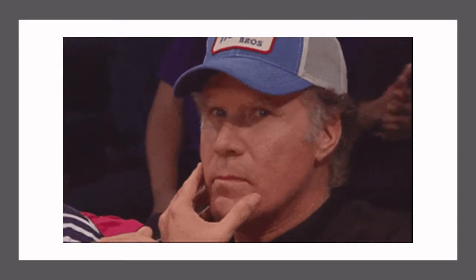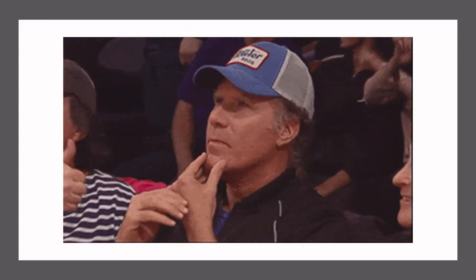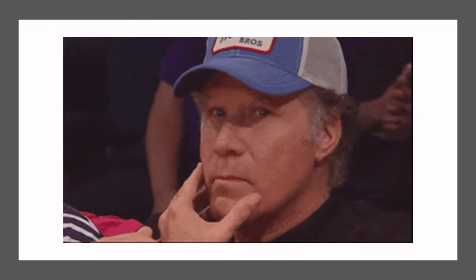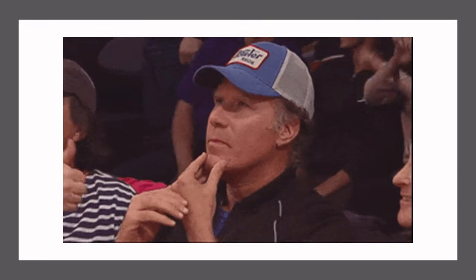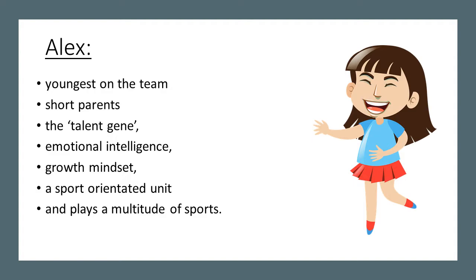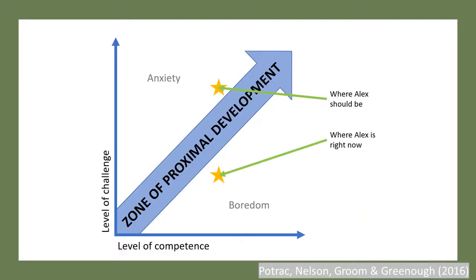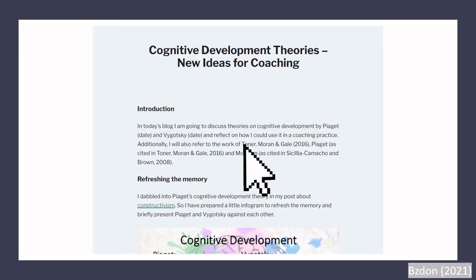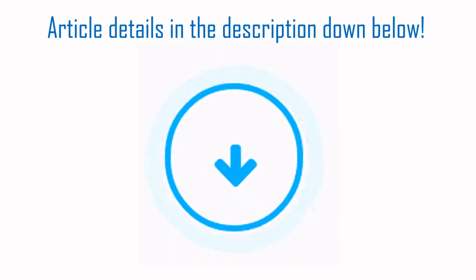Biobanding attempts to put players into equal groups through an insight into the height of their parents, but it doesn't account for other factors discussed in the previous videos of this series. Meet Alex! She is the youngest player in her team. Her parents are quite short, but she has the talent gene, emotional intelligence, a growth mindset, a sport-orientated upbringing, and plays a multitude of sports. The coach might instinctively put Alex into the lower bracket, but this will hinder her development as she has been placed below her zone of proximal development, also known as ZPD. To find out more about ZPD, I encourage you to read my blog post on cognitive development theories, which I will link in the description below.